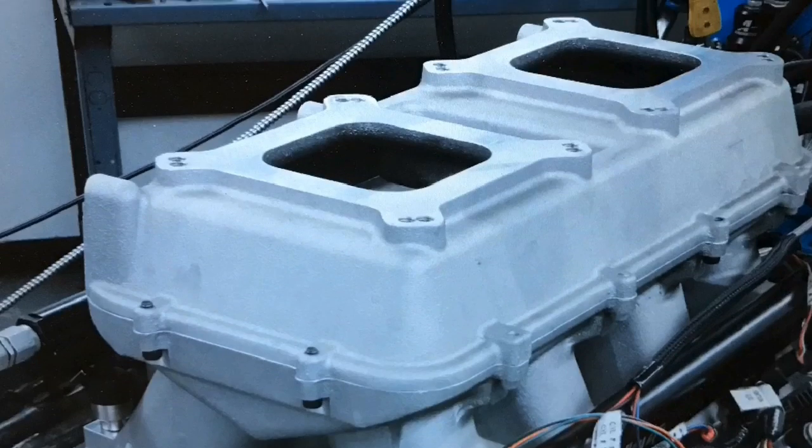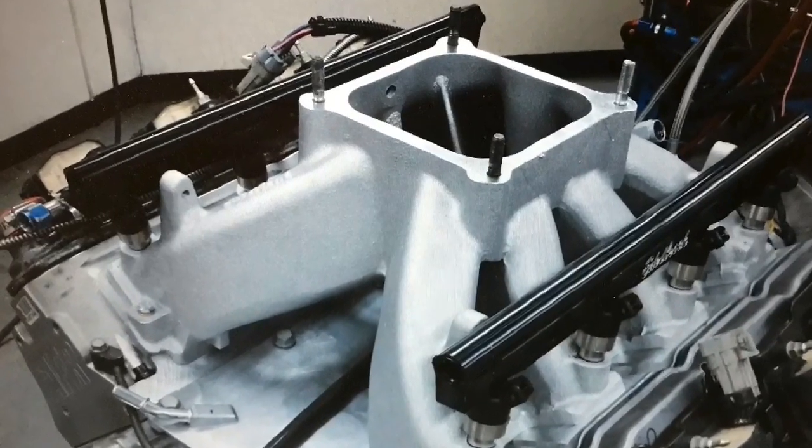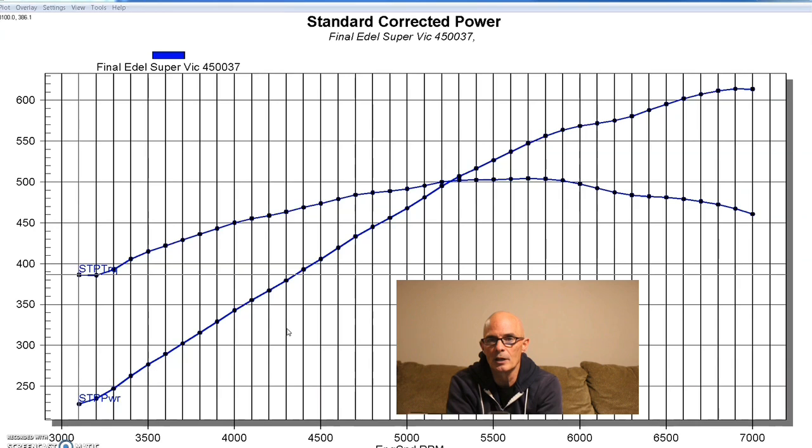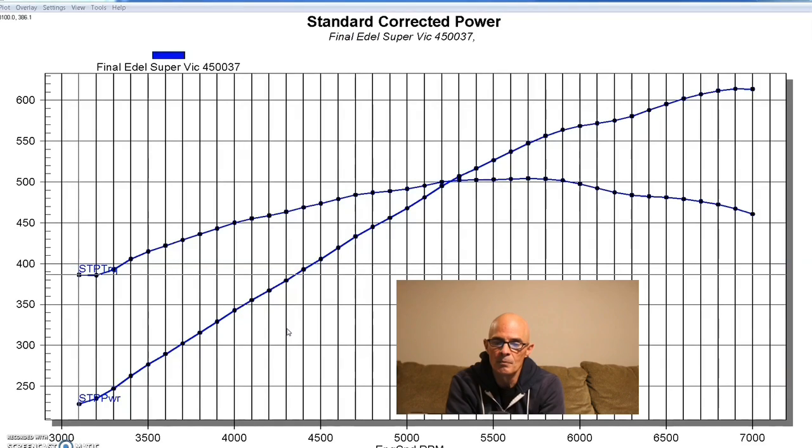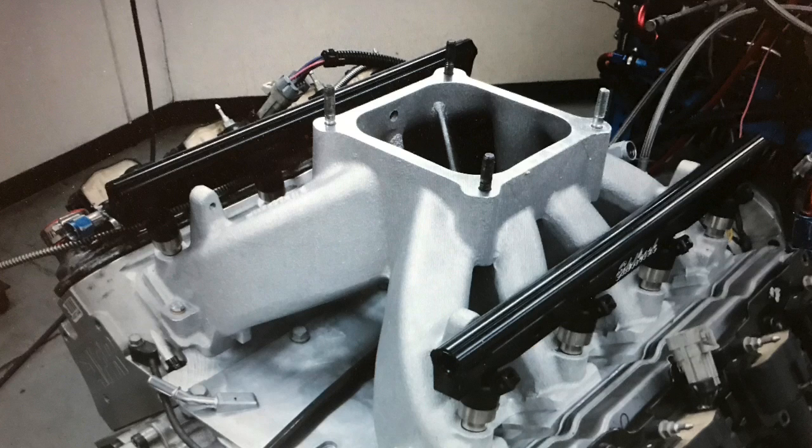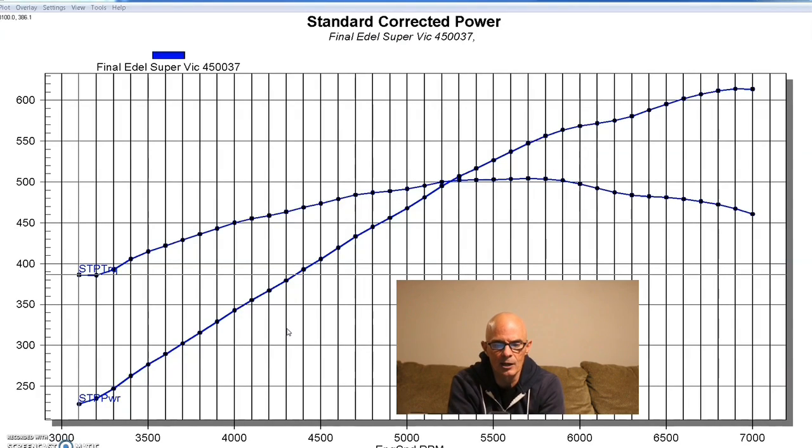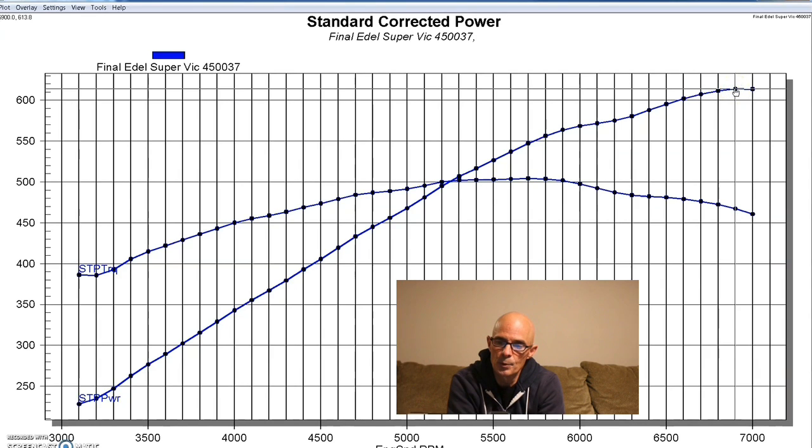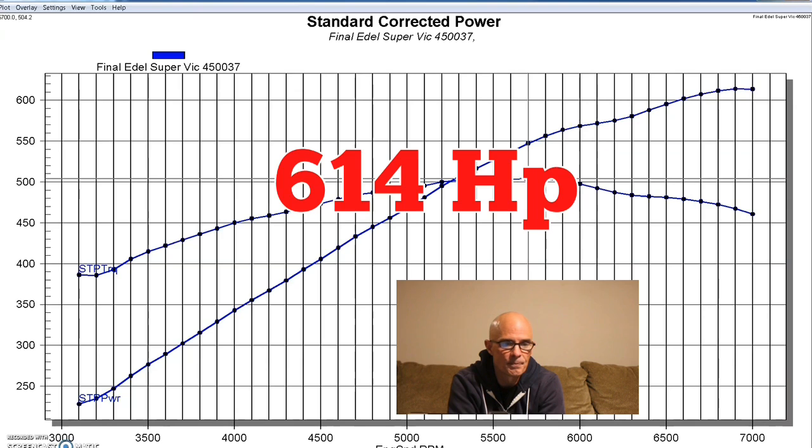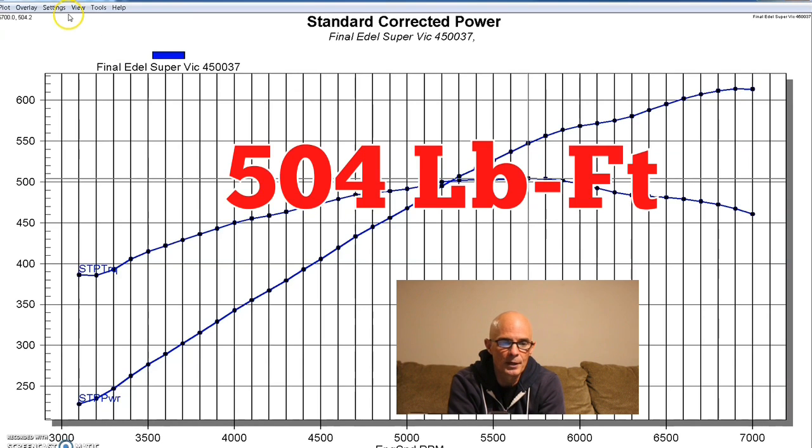We're comparing the Holley Hi-Ram to the Edelbrock Super Victor 4500 and this test was run on our cammed 6.2 liter LS3 crate motor equipped with our Edelbrock Super Victor intake. Remember this one was fuel injected not carbureted like we ran on the big motor. It was run with EFI and a 4500 four hole AccuFab throttle body so equipped with the Super Victor intake it made 614 horsepower and 504 foot-pounds of torque.